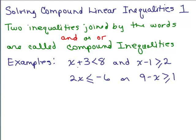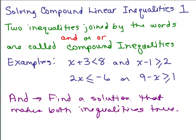We're going to begin with how to deal with compound inequalities that have the word 'and'. The word 'and' basically means both things have to be true, so you have to find a solution that makes both inequalities true. Now another word for 'and' in math is intersection.